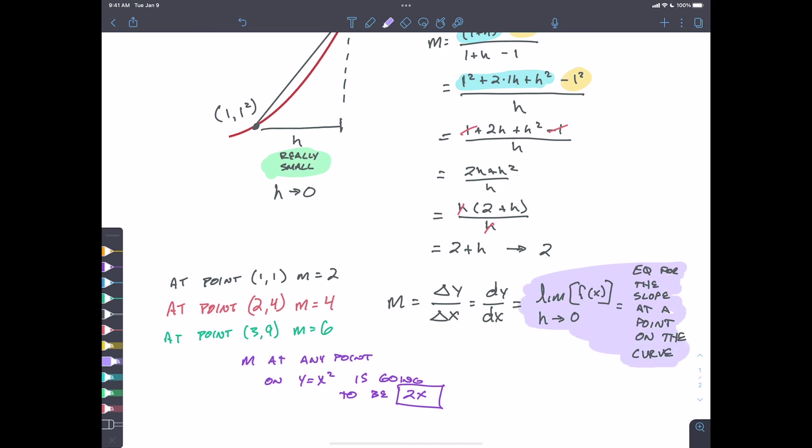The first principle says, hey, we can find this thing, this dy dx. This is the slope of any function. As we get the distance between two points infinitely close, is going to give us the equation of the slope at that point on the curve.